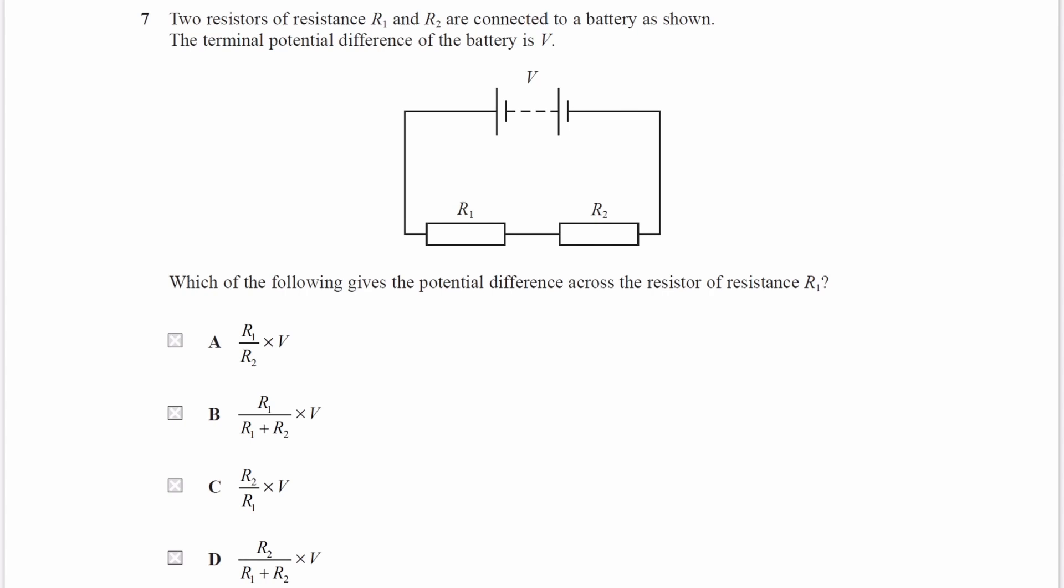So voltage splits in the same ratio as resistance. So whatever fraction of the total resistance R1 has, that will be the same fraction of the total voltage that it gets.